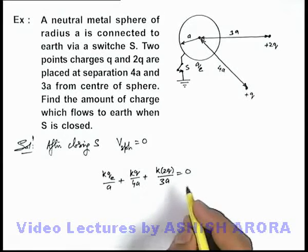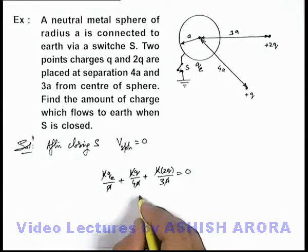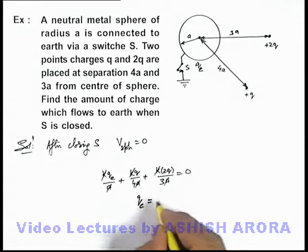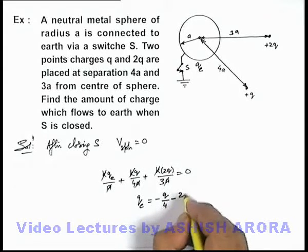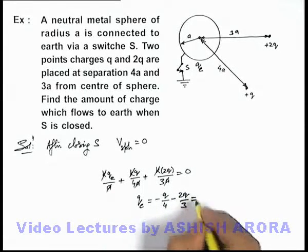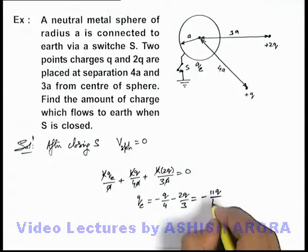Now in this situation k and a gets cancelled out, and on solving the value of q_e we are getting it will be minus q by 4 minus 2q by 3, and on simplifying we are getting it minus 11q by 12.